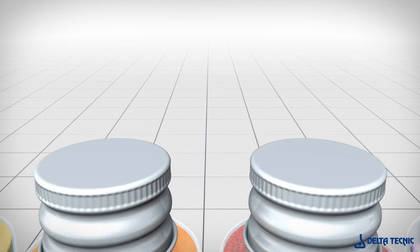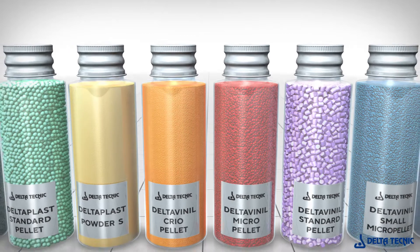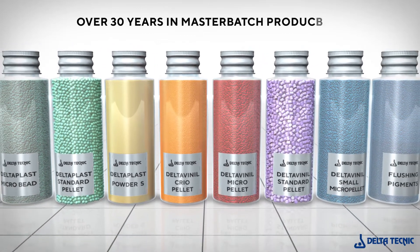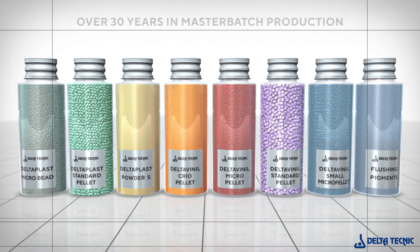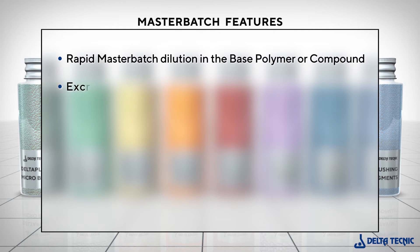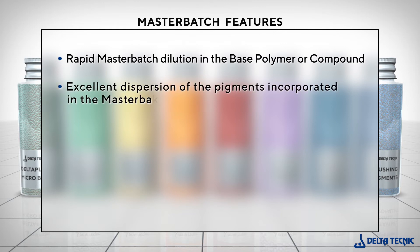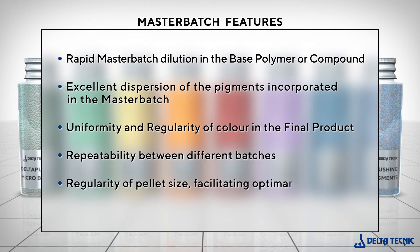Defects arising from poor master batch dispersion or dilution can be minimized by selecting the right master batch manufacturer. Thanks to its extensive experience of over 30 years in master batch production, Delta Technic guarantees the following master batch features: rapid master batch dilution in the base polymer or compound; excellent dispersion of the pigments incorporated in the master batch; uniformity and regularity of color in the final product; repeatability between different batches; and regularity of pellet size, facilitating optimal incorporation in the transformation process.